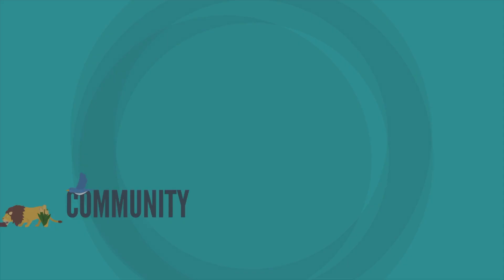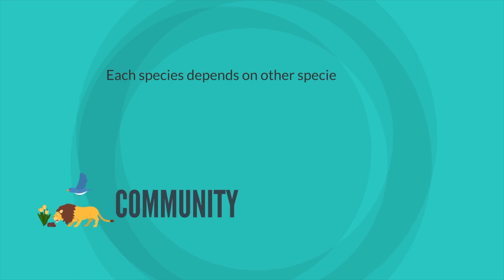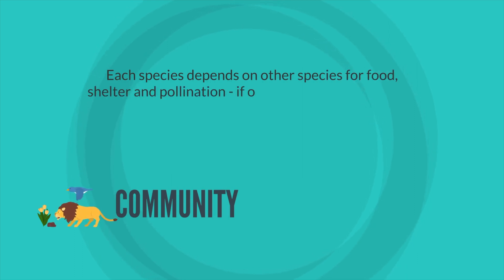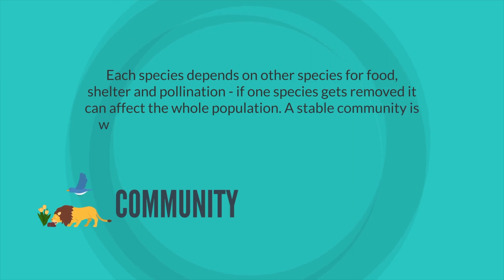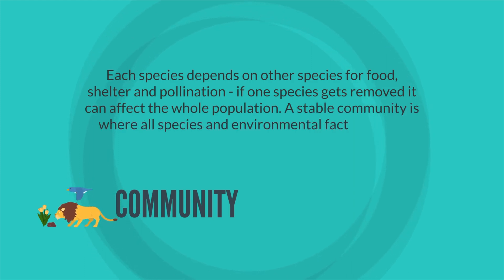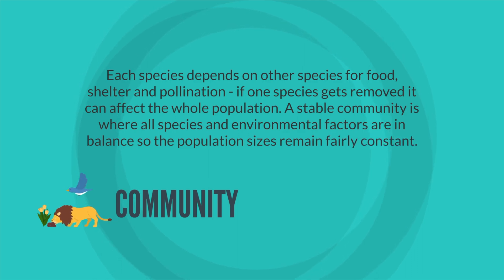In a community, each species depends on other species for food, shelter, and pollination. If one species gets removed, it can affect the whole population. A stable community is where all species and environmental factors are in balance, so the population size remains fairly constant.